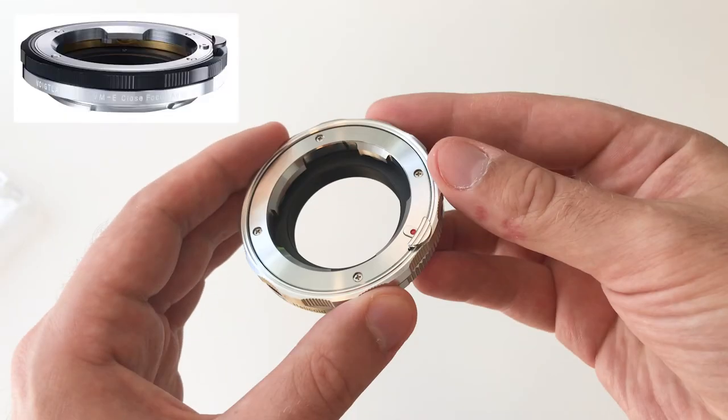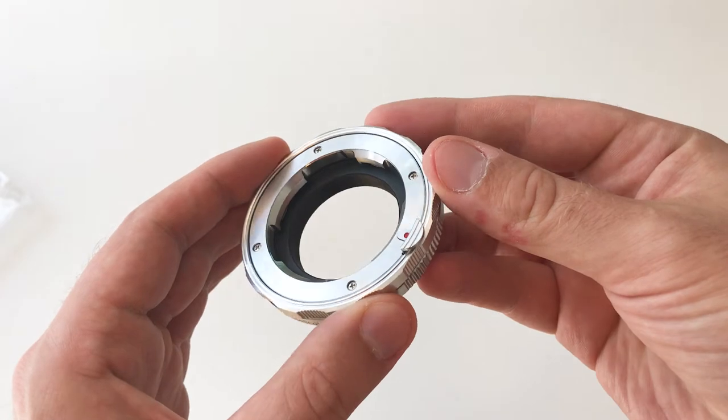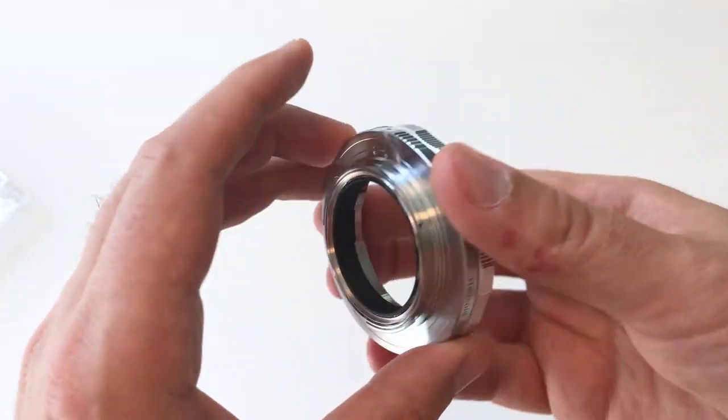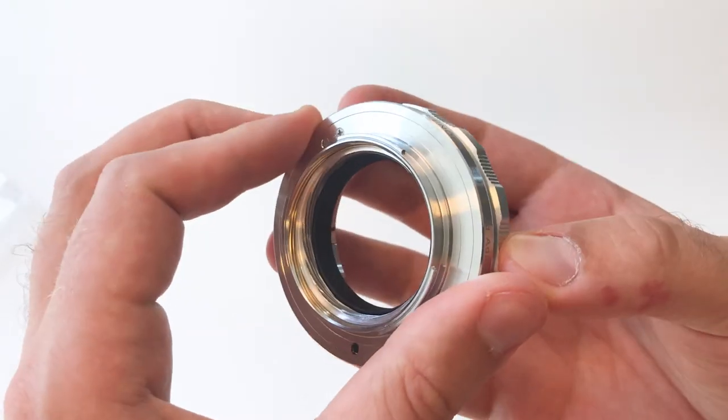Voigtlander also offers a very similar helicoid adapter. Actually, I think this one is a blatant copy of the Voigtlander one, but the Voigtlander one is a lot more expensive and it only extends 4 millimeters.